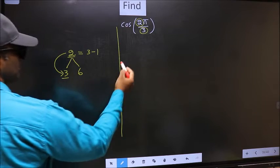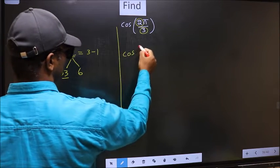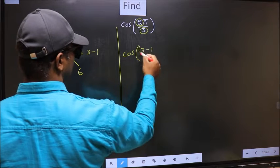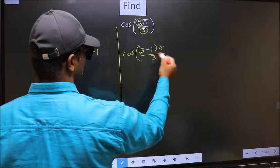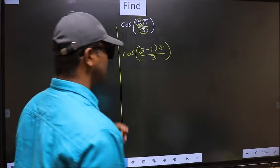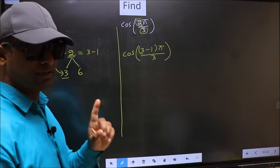So this will become cos, in place of 2 now you should write 3 minus 1, π by 3. This is your step 1.